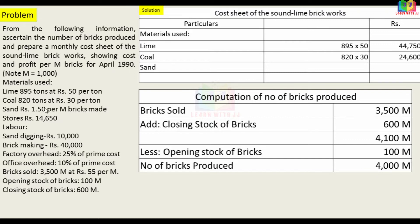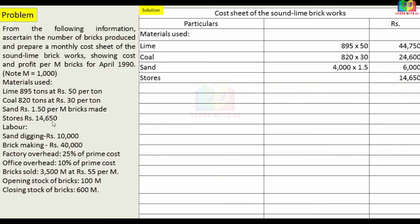Now, sand cost: 4,000 M into 1.50 per M gives 6,000. This is the sand amount. Next, we add stores amount of 14,650.